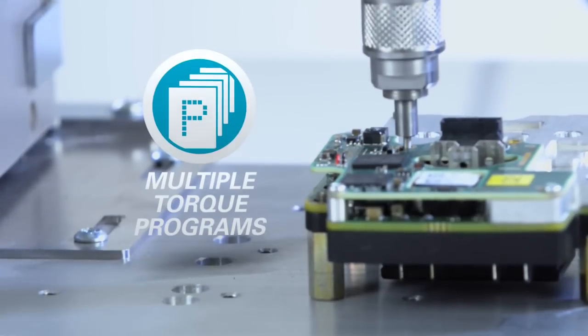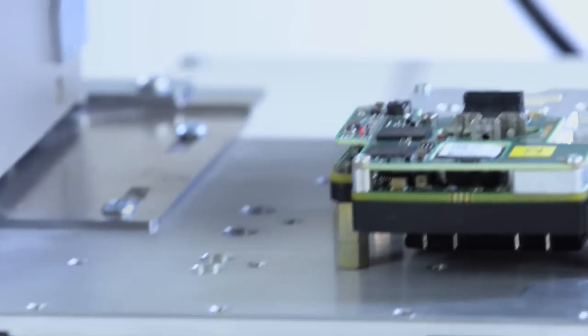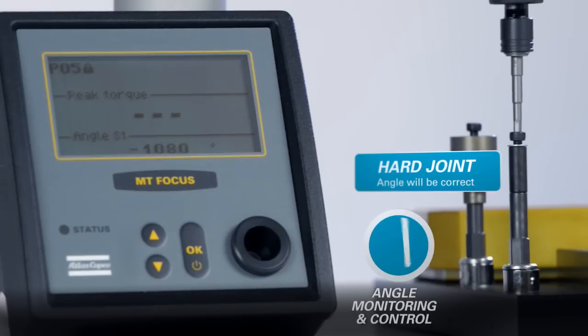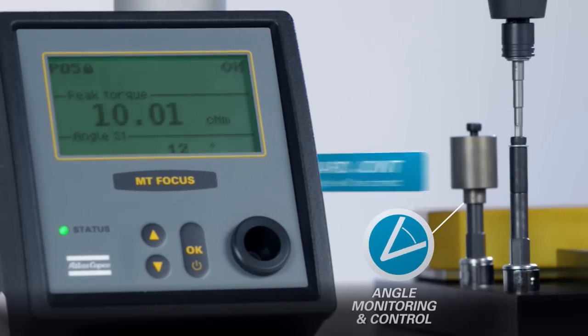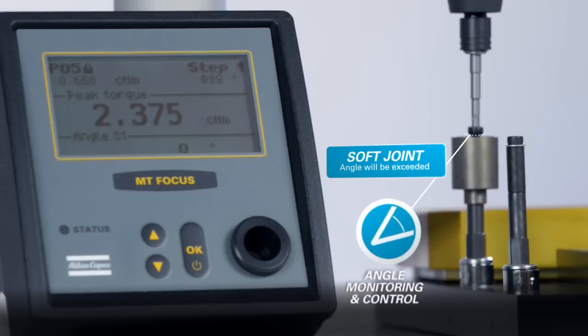Multiple torque programs minimize and eliminate setups. Avoid unnecessary errors with the angle monitoring and control functionality. Not only does it detect stripped joints and missing components, it eliminates misalignments and incomplete tightenings.